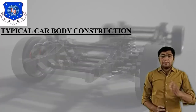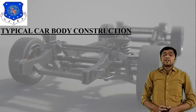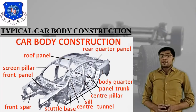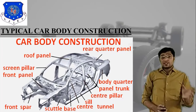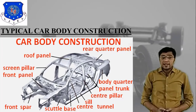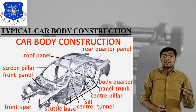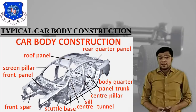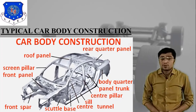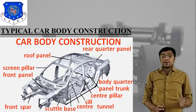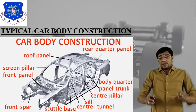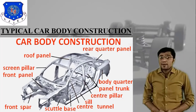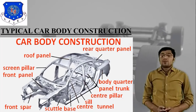Second is typical car body construction. I have attached one image that relates to typical car body construction. It is just like a car body frame. As you can see, the front part includes the front panel, and the rear part includes the rear quarter panel. At the base there is a floor structure, and front components are also present. This is what typical car body construction looks like.